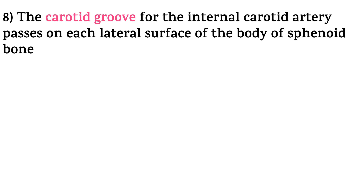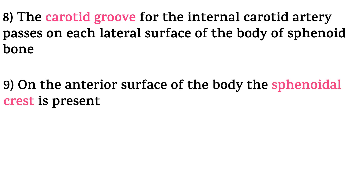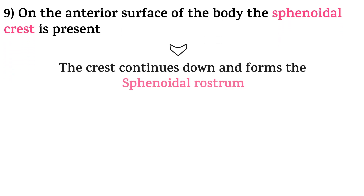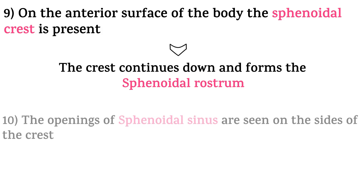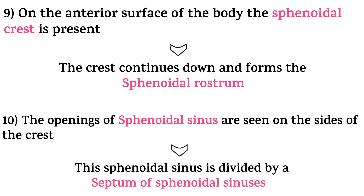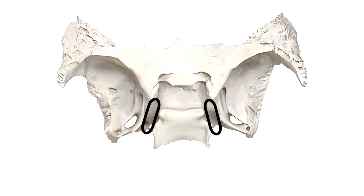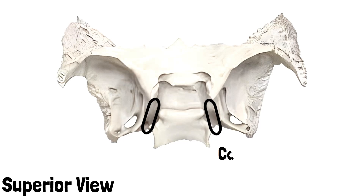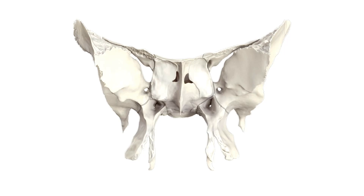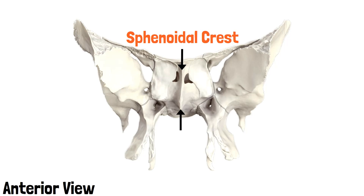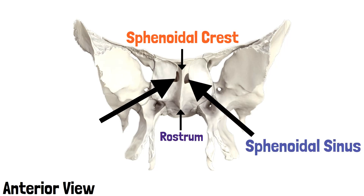The carotid groove for the internal carotid artery passes on each lateral surface of the body of the sphenoid bone. On the anterior surface of the body, the sphenoidal crest is present. The crest continues down and forms the sphenoidal rostrum. The openings of the sphenoidal sinus are seen on the sides of the crest, and this sphenoidal sinus is divided by the septum of sphenoidal sinuses. The marked area in black is the carotid groove. This crest is the sphenoidal crest, which continues down to form the sphenoidal rostrum. These holes are the sphenoidal sinuses, seen on either side of the crest. With this we complete the body of the sphenoid bone.